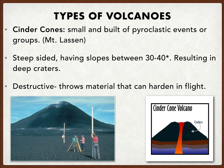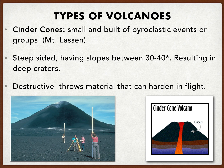The next type we'll talk about are cinder cones. We actually have a ton of these along the eastern Sierra — if you've driven on 395 heading up towards Mammoth, you might look to the right and see these nice little pointy red cones and wonder if they're volcanoes. They're small and built of pyroclastic events or groups. An example would be Mount Lassen. They're very steep-sided, having slopes between 30 to 40 degrees, resulting in deep craters at the top. They're also very destructive — they can throw materials very far, which will also cool in mid-flight. These are more the type that blow their tops versus their sides.